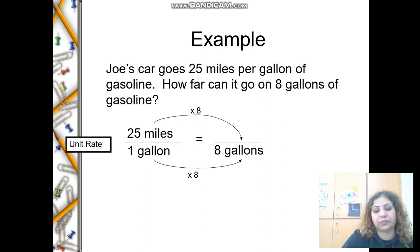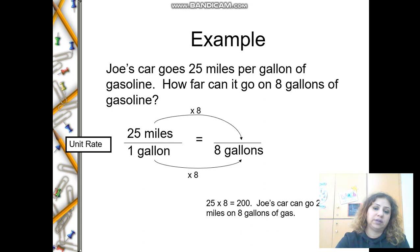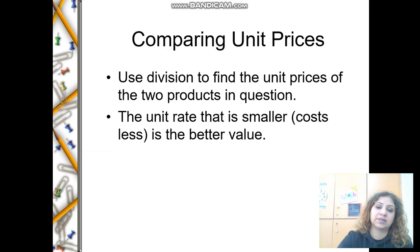This is called cross multiply. I multiply 25 by the eight and the one also by the eight, and that equals 200. As you see, 25 times 8 is 200. So he is going to move 200 miles using eight gallons of gasoline.